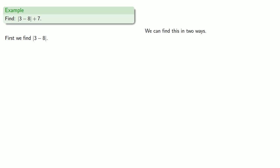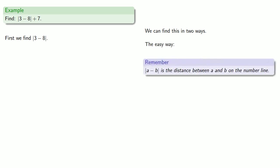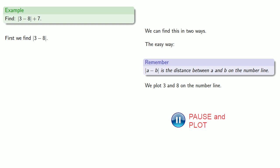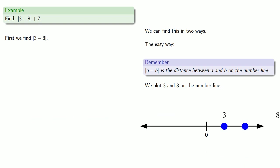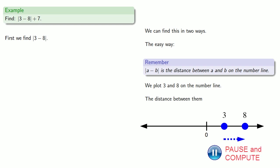We can do this in two ways. The easy way is to remember that the absolute value of a minus b is the distance between a and b on the number line. So we'll plot 3 and 8 on the number line and find the distance between them, which will be 5. So the absolute value of 3 minus 8 is 5.